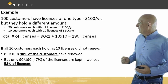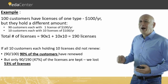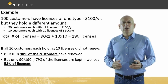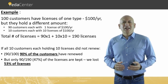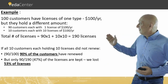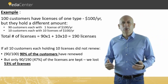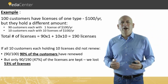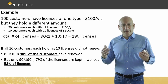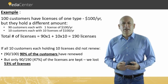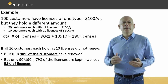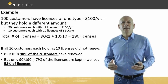So, 90 customers each hold one license at an annual cost of $100. And 10 other customers each hold 10 licenses, all together holding 100 licenses. So we have all together 190 licenses from 100 customers, each at $100 — 190 times $100 equals $19,000.